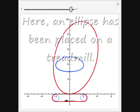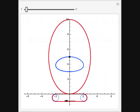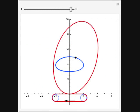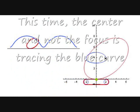This is what we get if we place an ellipse on a treadmill and we use its center as a tracing point. The tracing point can be any point in the plane containing the ellipse.